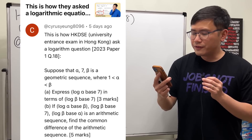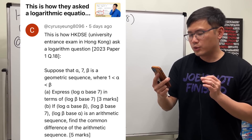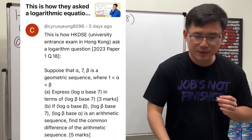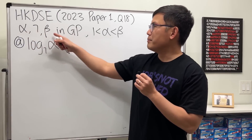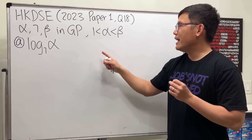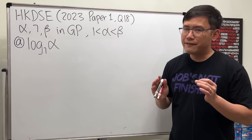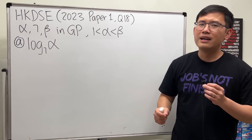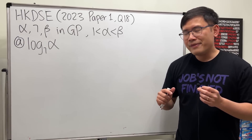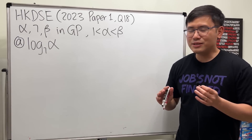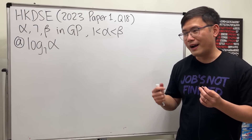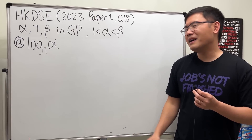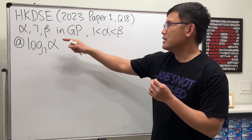This is how the HKDSE university entrance exam in Hong Kong asked a logarithmic question — this is from the 2023 paper 1, question number 18. We have α, 7, β in geometric progression with 1 < α < β. Part A asks us to express log base 7 of α in terms of log base 7 of β — that part is not so bad. The worst part is part B, which took me a while.